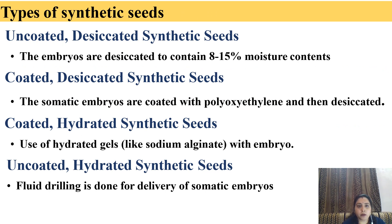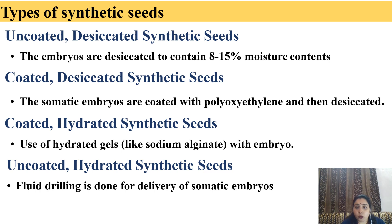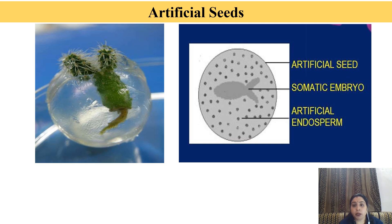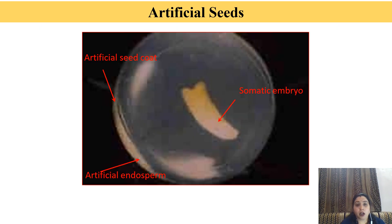Types of synthetic seeds. Basically, there are two types of synthetic seeds: desiccated synthetic seeds and hydrated synthetic seeds. We can subdivide it into more types like uncoated desiccated synthetic seeds, in which the embryos are desiccated to contain 8 to 15 percent moisture content. Coated desiccated synthetic seeds, in which somatic embryos are coated with polyoxyethylene and then they are desiccated. Coated hydrated synthetic seeds, in which hydrate gels like sodium alginate are used. Uncoated hydrated synthetic seeds, in which fluid drilling is done for delivery of somatic embryos. Artificial seeds have somatic embryo, artificial endosperm, and artificial seed coat.